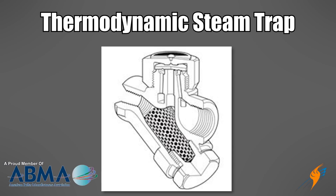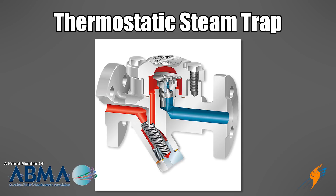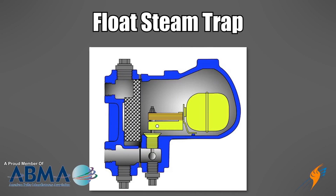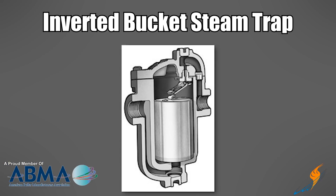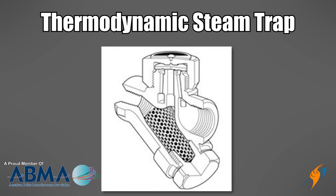Now there are ways to get the condensate to return. One of the ways is traps. We want to talk about four different types of traps. First is thermodynamic, second would be thermostatic, then there's the float, and then there's the inverted bucket. So why don't we start with the thermodynamic and talk about what that actually is?